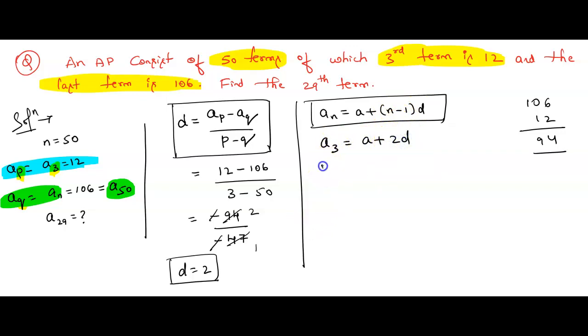A₃ equals A plus (3-1) is 2D. A₃ value is 12 equals the value of A, we do not know, plus 2 times value of D is 2. 12 equals A plus 4. 12 minus 4 equals A. Therefore, A equals 12 minus 4 is 8.